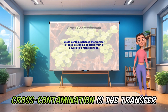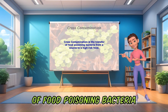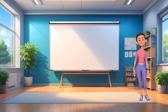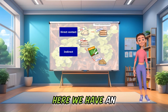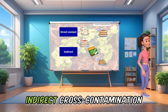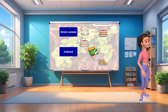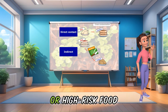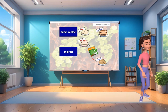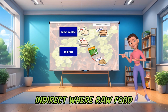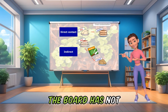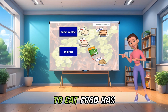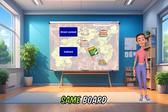Cross-contamination is the transfer of food poisoning bacteria from a source to a high-risk food. Here we have an example of direct and indirect cross-contamination. Direct: raw poultry coming into contact with ready-cooked or high-risk food. Indirect: where raw food has been prepared on a board, the board has not been cleaned or disinfected, and cooked ready-to-eat food has been prepared on the same board.